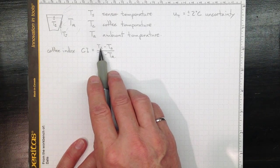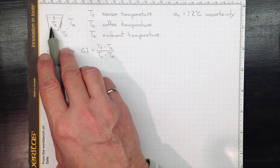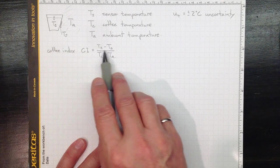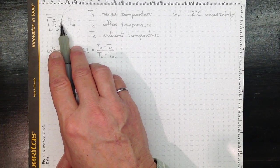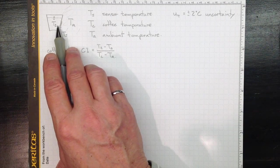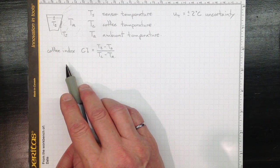So if the sensor temperature is at ambient temperature, this index will be zero. If the sensor temperature is at the coffee temperature, this index will be one. And it'll represent the percentage how close we've managed to get the temperature sensor to the coffee temperature and away from the ambient temperature.